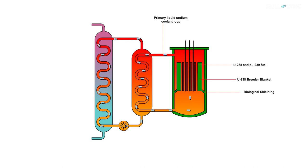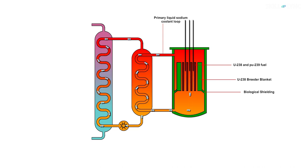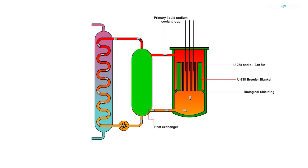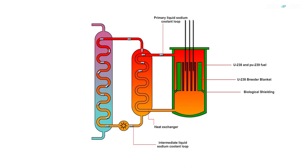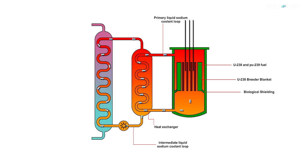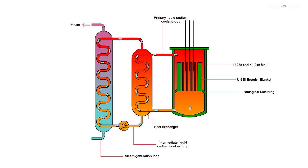As the nuclear fission occurs in the core, the liquid sodium in the primary loop transfers the heat to the intermediate liquid sodium loop through a heat exchanger. The intermediate loop has liquid sodium as coolant. The heat from the liquid sodium in the intermediate loop is used to generate steam from water in a steam generator. This steam is further sent to drive a turbine and returns as water through a condenser.